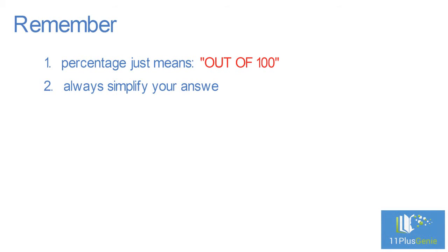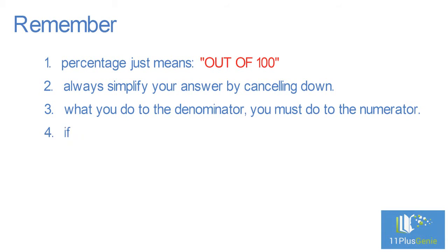Percentage means out of a hundred. Always simplify your answer by cancelling down. What you do to the denominator, you must do to the numerator. If the numerator is a decimal, multiply by 10 to get rid of the decimal.